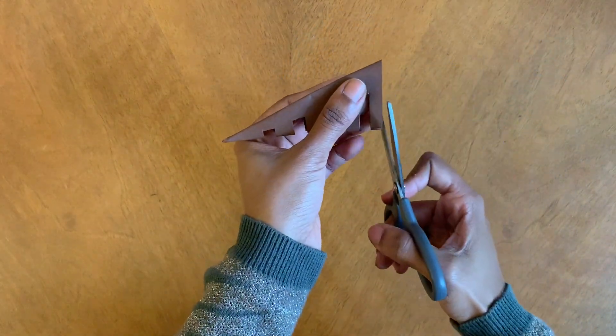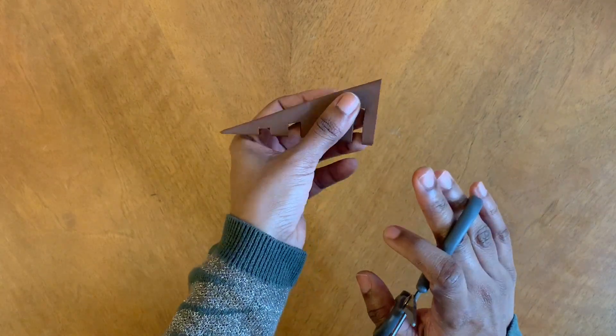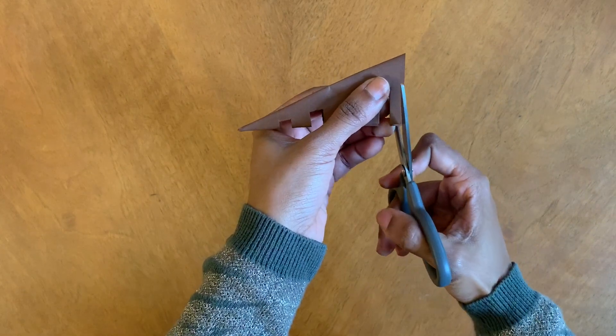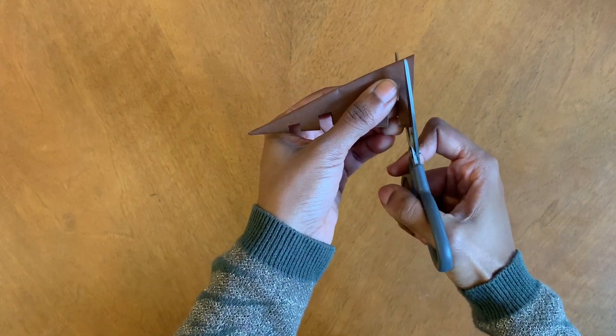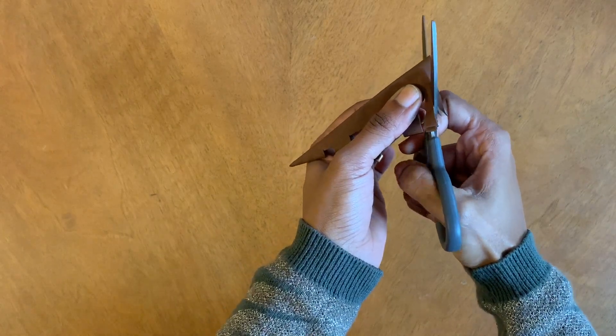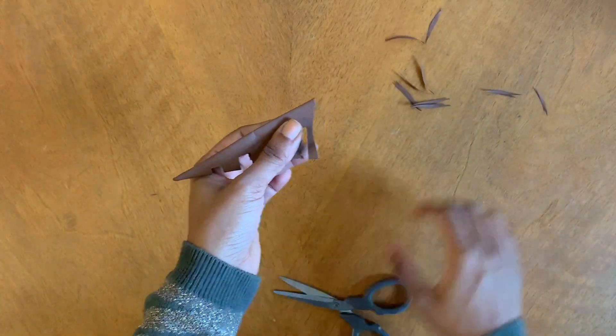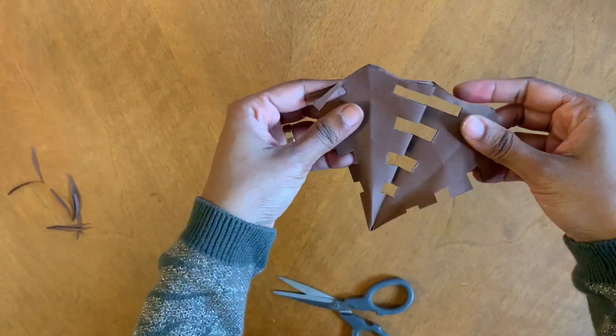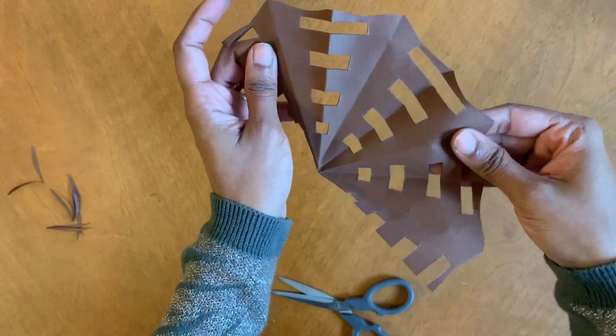So I forgot to cut a curve right in the beginning. This is what you have to do in the beginning before you start cutting the rectangles out. You have to make a small curve around your paper so that when you open it, it looks like the end of your spider web.